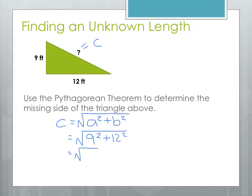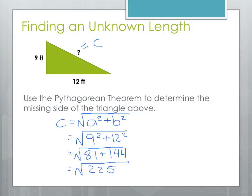Before we can take the square root, we have to do everything inside. 9 squared is 81, plus 12 squared is 144. We'll add these two together: 81 plus 144 is 225. And then finally we can take the square root. The square root of 225 is 15 feet.